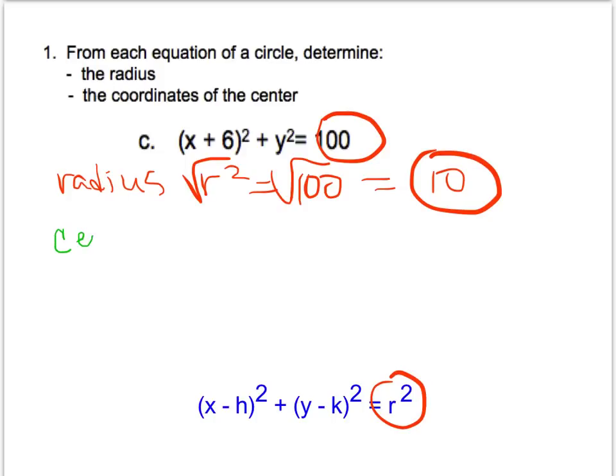And then for the center of this circle, you'll notice that I do have an x value in here, but nothing with the y. Keep in mind when there's no number there, that actually could be rewritten as (x + 6)² plus we could put a y + 0 there.